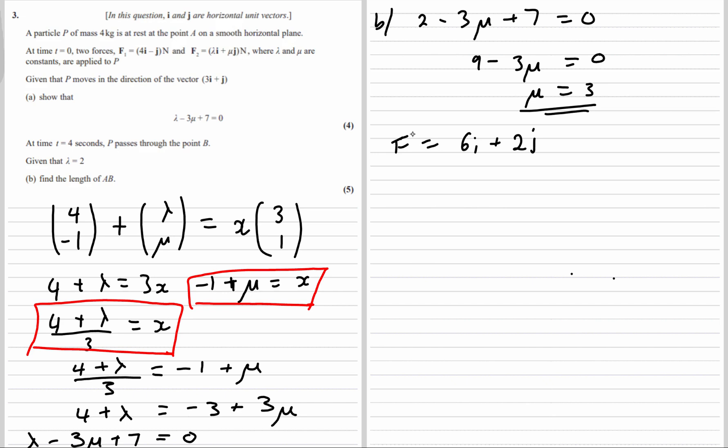We need to know the distance, so we can do SUVAT. We can use the force to find A. So F equals MA. So 6i plus 2j equals 4a. So a is a quarter of this. So 3 over 2i plus a half j. That's the acceleration.